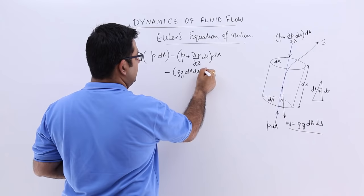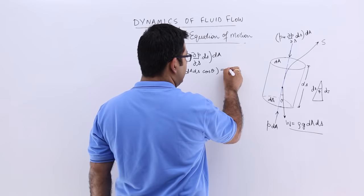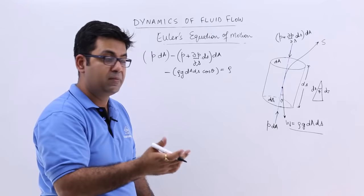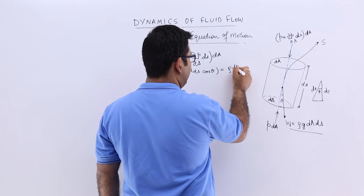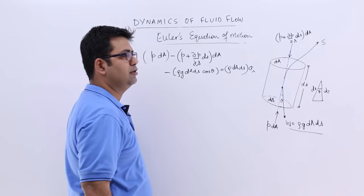Net force is going to produce or you can say this is equal to net force which produces the motion with an acceleration. So the mass would be density into volume into the acceleration in the direction of s. So that is A_s.